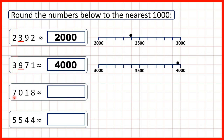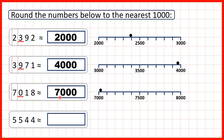Now we have 7,018. Again, we highlight our thousands digit and underline the digit to the right. We have a zero — because that's less than four, we're rounding down. Because it's four or less, we round down, so the seven is going to stay a seven. All other digits turn into zeros, so we get 7,000.